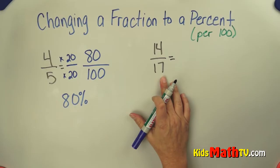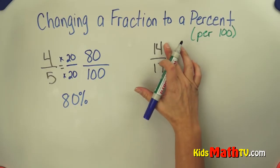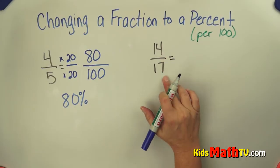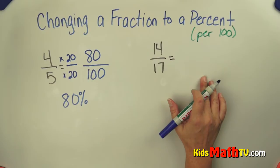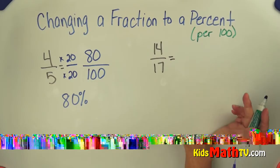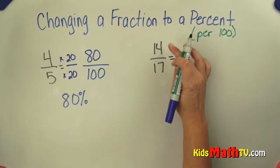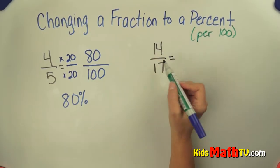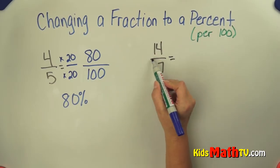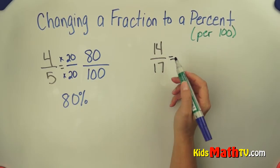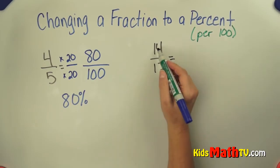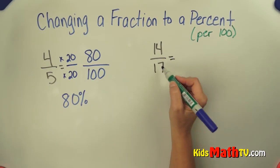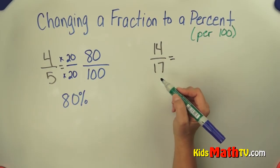If I look at 14 over 17, I can't really get from 17 to 100 easily, so I'm going to do it a different way. I'm going to do the division. This fraction bar means to divide, so this means 14 divided by 17.